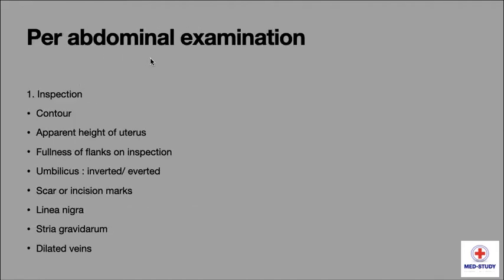Then we have to do per abdominal examination. First point is inspection — we inspect for the contour of the abdomen, apparent height of uterus, fullness of flanks. We inspect the umbilicus, whether it is inverted or everted. Then we look for scar or incision marks, linea nigra, stria gravidarum, and dilated veins.